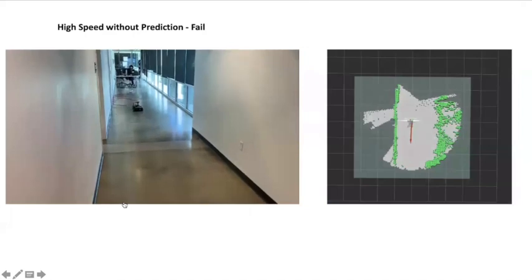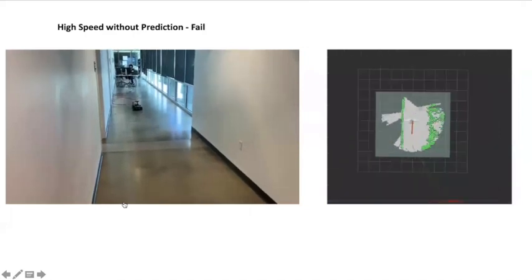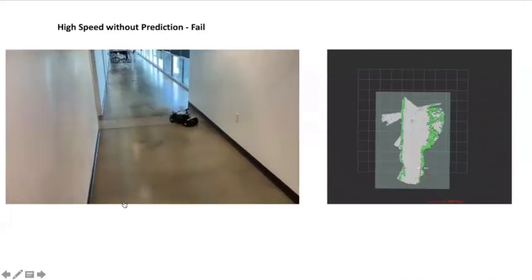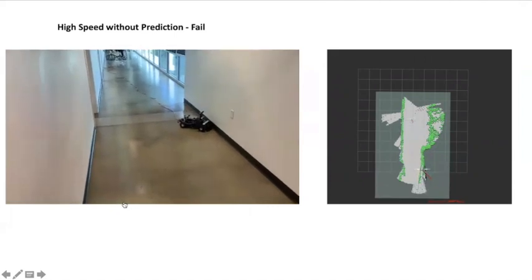We then ran at a higher speed of 3 meters per second, also without prediction, and in this case the robot is not able to make it to the goal and instead collides with the wall.